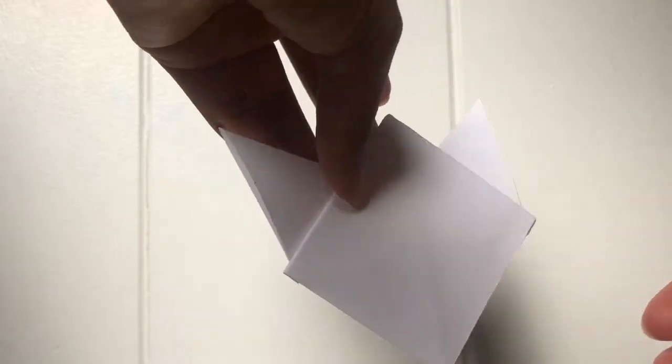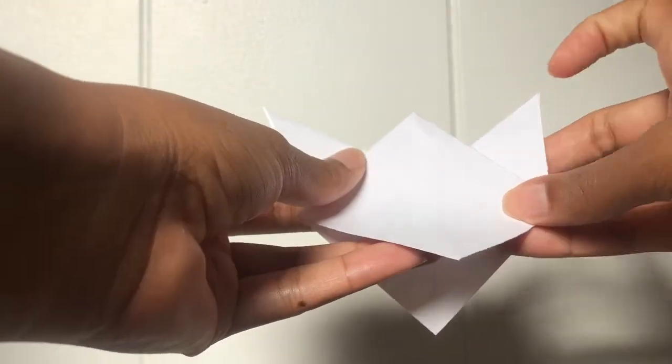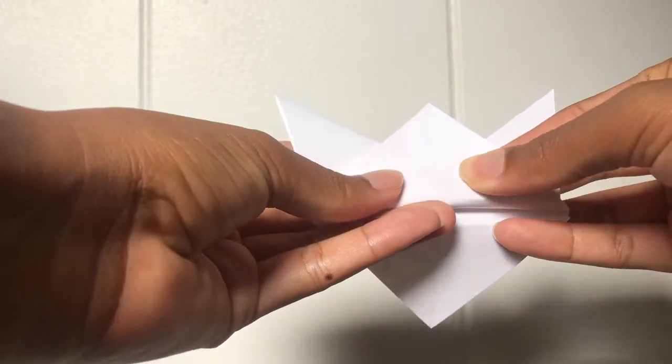Turn your origami around and then pick up the bottom flap and bring it up to meet the top.